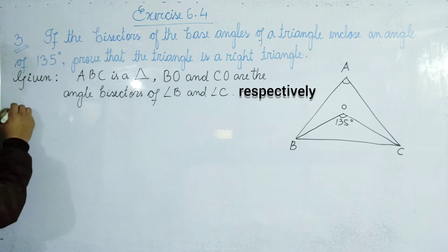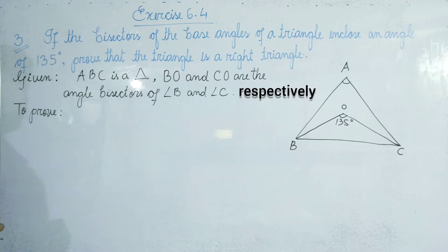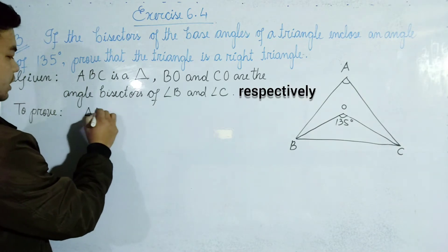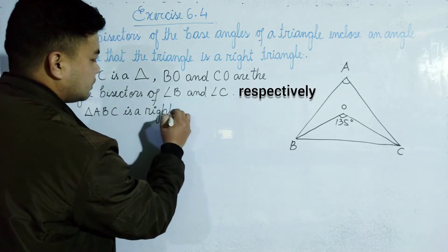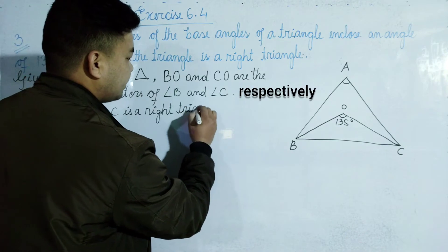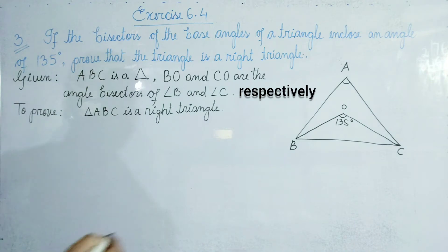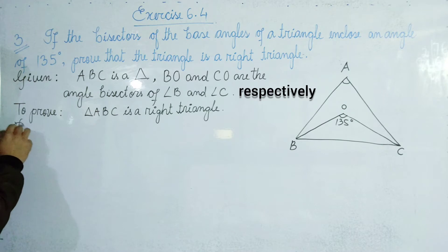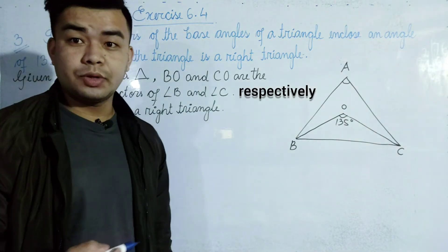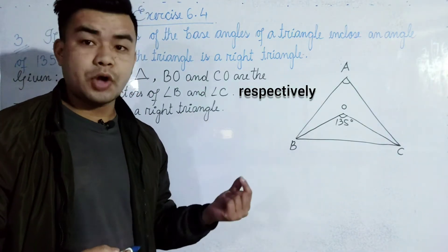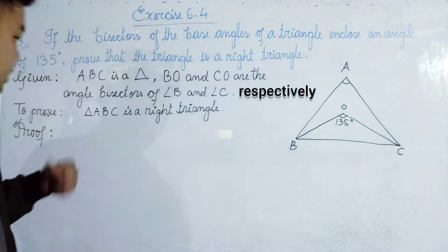To prove: triangle ABC is a right triangle. We can see the proof. The triangle is a right triangle — this is less than 100%. Right triangle, without proof.